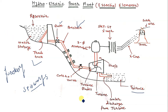The next element is the draft tube. The draft tube is a passage that connects the exit of the turbine runner down to the tailrace, providing a connection between the turbine and the tailrace.